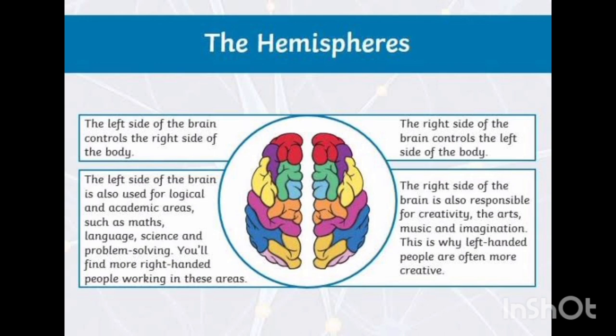The left side of the brain controls the right side of the body — you should always remember this. While the right side of the brain controls the left side of the body, so they work oppositely, vice versa, to each other.